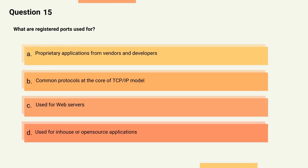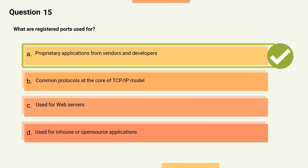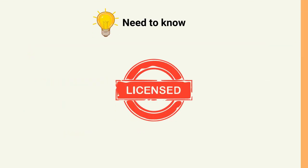Question 15: What are registered ports used for? Options: A) Proprietary applications from vendors and developers, B) Common protocols at the core of the TCP/IP model, C) Used for web servers, D) Used for in-house or open source applications. The correct answer is Option A. Explanation: Registered ports are often associated with proprietary applications from vendors and developers and fall in the range of 1024–49151.